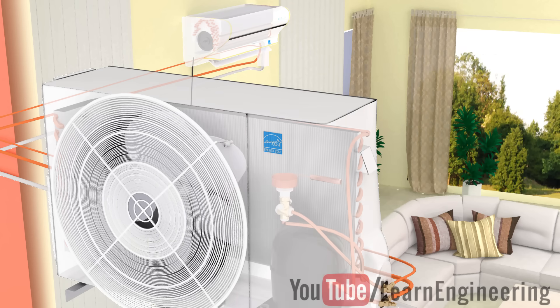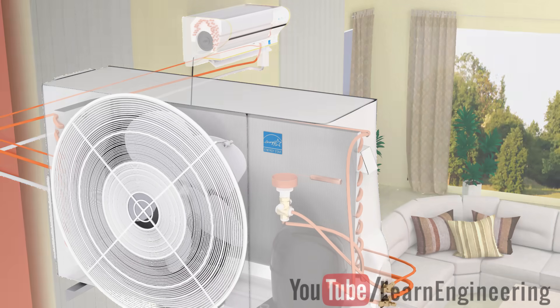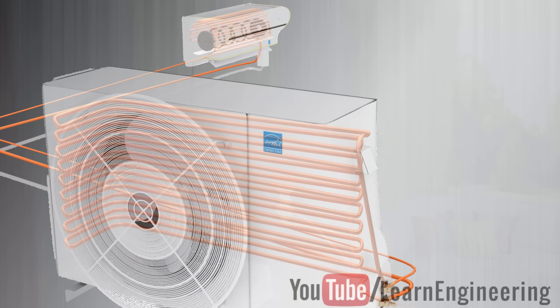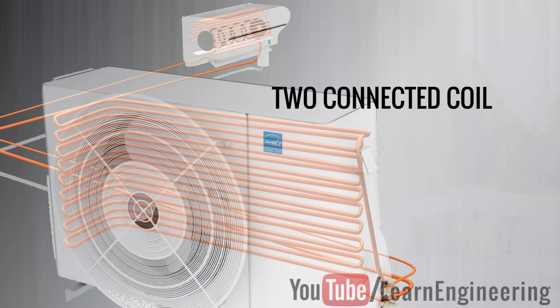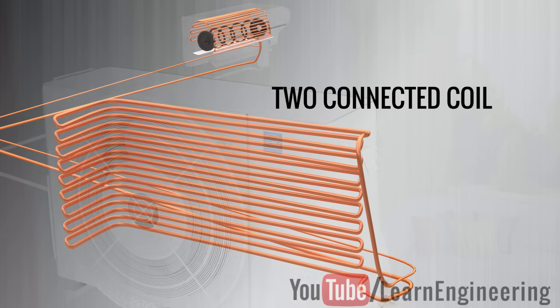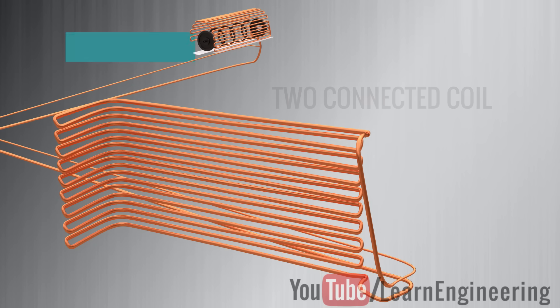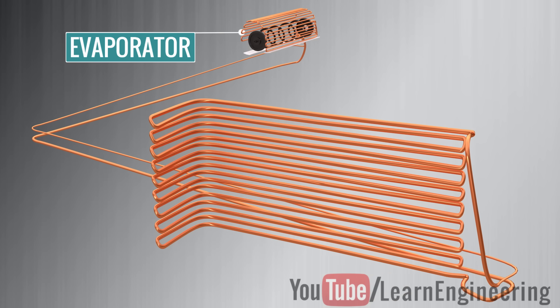Let's start with a very simple approach to understanding the functioning of an air conditioner. An air conditioner has two connected coils with continuously flowing refrigerant fluid inside them. The coil inside the room is called the evaporator and the coil outside the room is called the condenser.